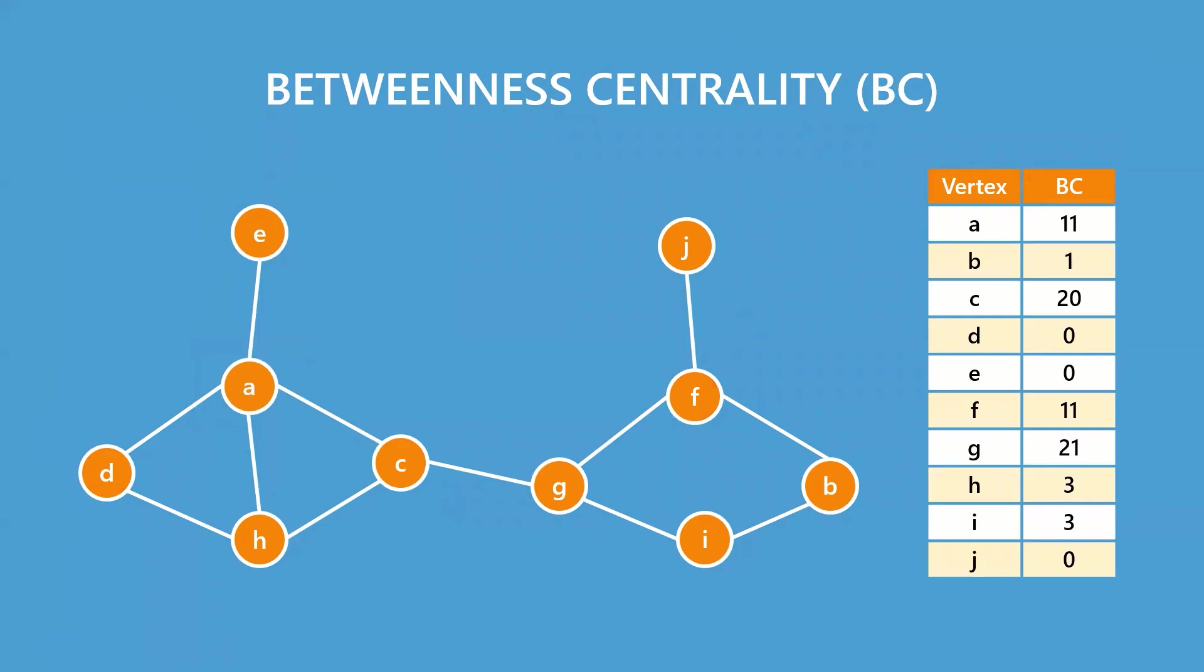The betweenness centrality of a vertex represents how many times a particular vertex comes between other vertices. It quantifies how important a vertex is to the connection between other vertices.